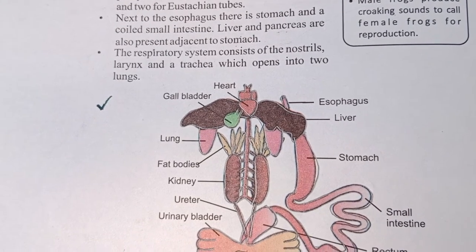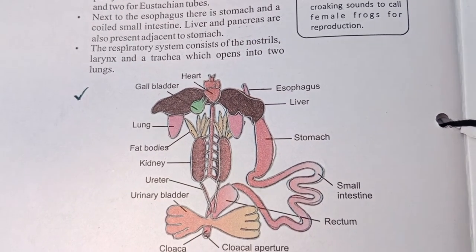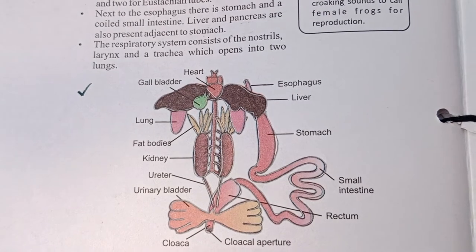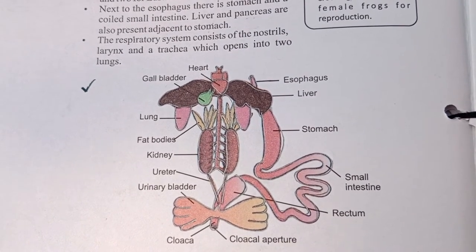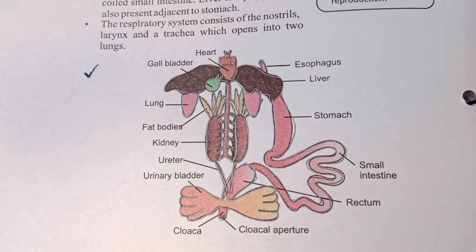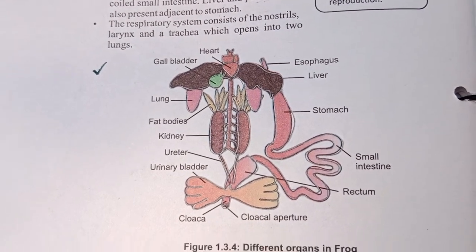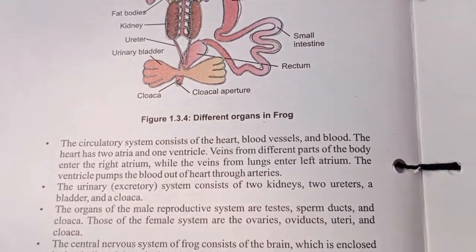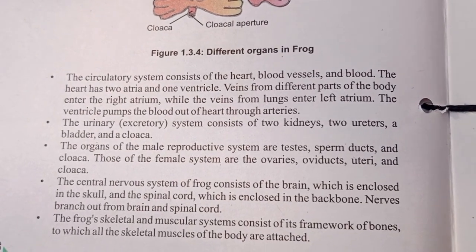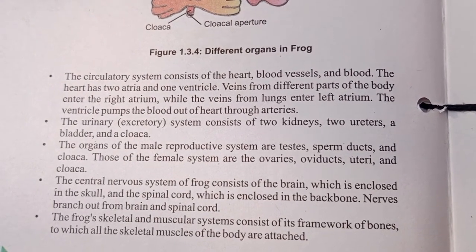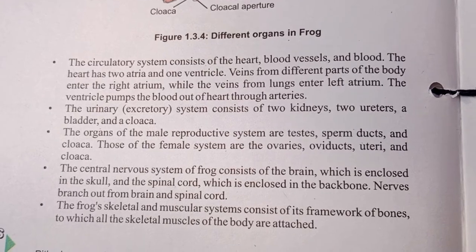The respiratory system consists of the nostrils, larynx, and trachea, which open into two lungs.